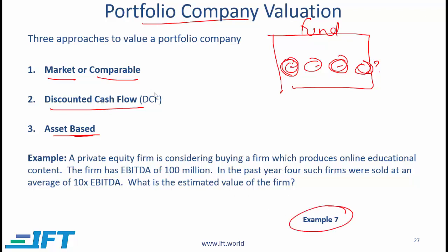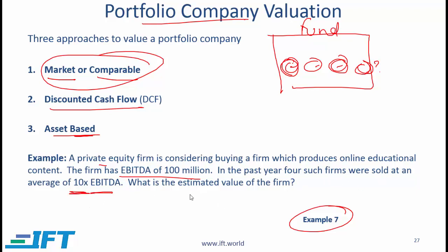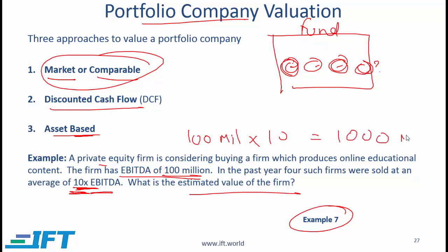Example 7 in the curriculum uses the multiples method. For example, if a private equity firm is considering buying a firm that produces online educational content with an EBITDA of 100 million, and four similar firms were recently sold at an average of 10 times EBITDA, the best estimate of value is 100 million multiplied by 10 — giving an estimated value of 1 billion.